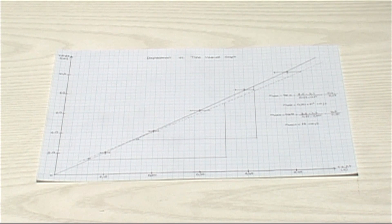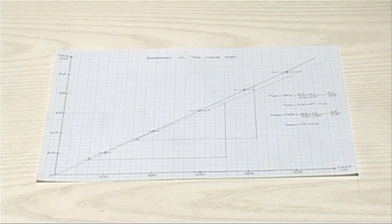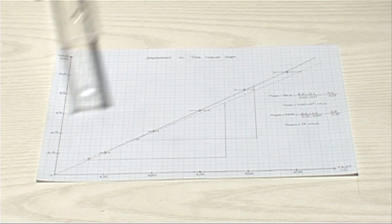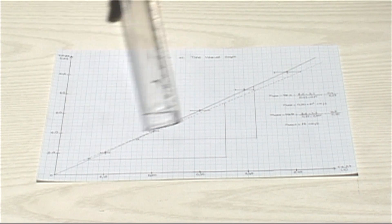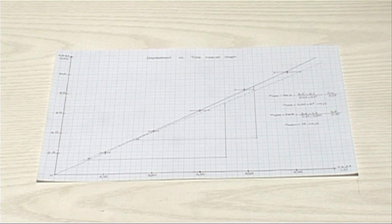This is the best line — the solid one. Then, again using the information given in the general part of the menu, we draw the line that worst fits the data. This is the worst line — the dashed one. At the end, we calculate the slopes of these lines.